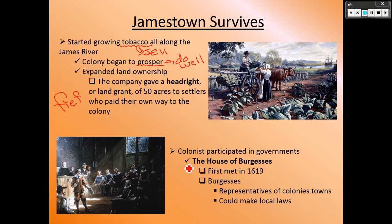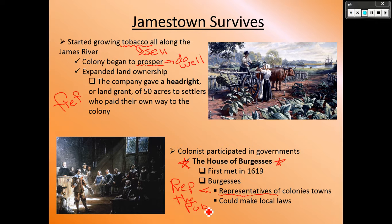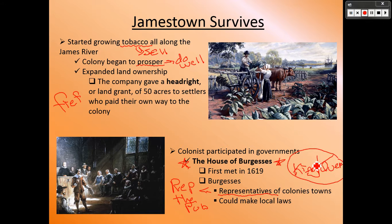The biggest key was the House of Burgesses — they set up a form of government, and that form of government was representative. This is the first time we'll see this this year and definitely not the last. A representative government is where they represent the public — people are allowed to have a say in government. This is huge compared to England, where just one king or queen made all the decisions. In the new world, they wanted representative governments where everyone could have a say.